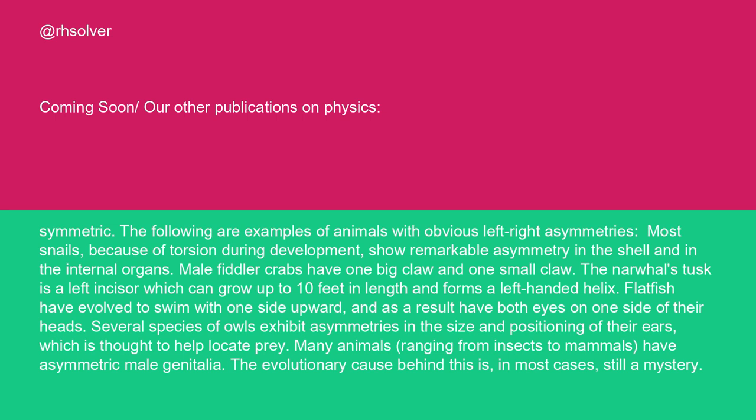The following are examples of animals with obvious left-right asymmetries. Most snails, because of torsion during development, show remarkable asymmetry in the shell and in the internal organs. Male fiddler crabs have one big claw and one small claw. The narwhal's tusk is a left incisor which can grow up to 10 feet in length and forms a left-handed helix. Flatfish have evolved to swim with one side upward and as a result have both eyes on one side of their heads. Several species of owls exhibit asymmetries in the size and positioning of their ears, which is thought to help locate prey. Many animals ranging from insects to mammals have asymmetric male genitalia. The evolutionary cause behind this is, in most cases, still a mystery.